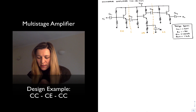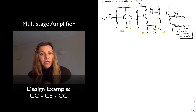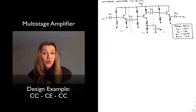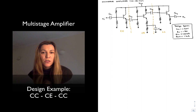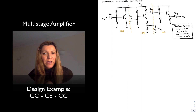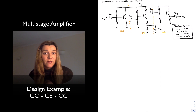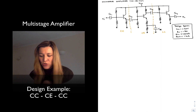I've added coupling capacitors CC1, CC2, CC3, and CC4 — not just at the input and output, but also in between stages. Those are so that the DC bias point of one circuit won't be affected by the adjacent stage.